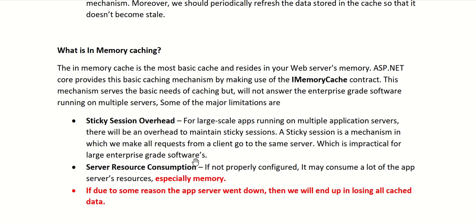Some major limitations of in-memory cache: this approach is good when you have only one instance of your application server running, but when there are multiple servers it won't work out. For large-scale apps running on multiple servers there is an overhead to maintain sticky sessions — a mechanism where all requests from a client go to the same server — which is impractical with load balancing, especially in Kubernetes environments.